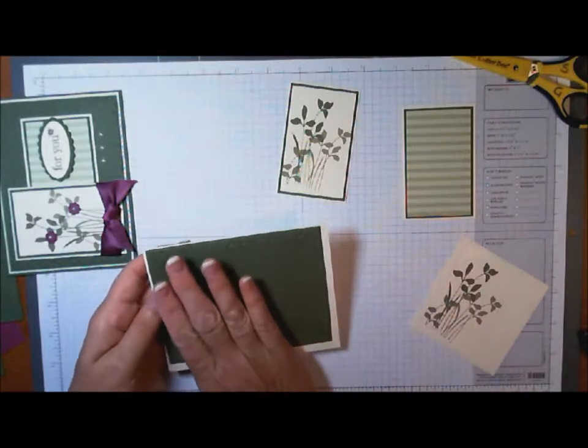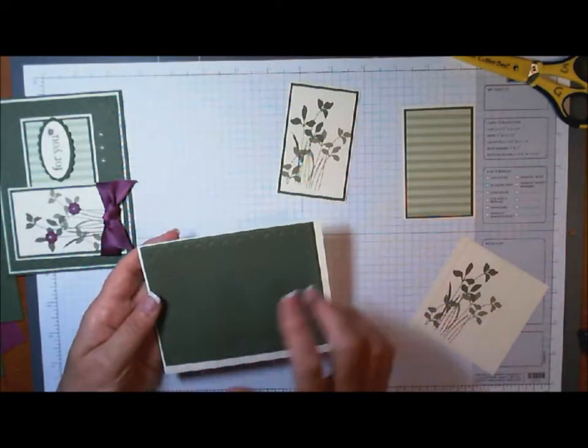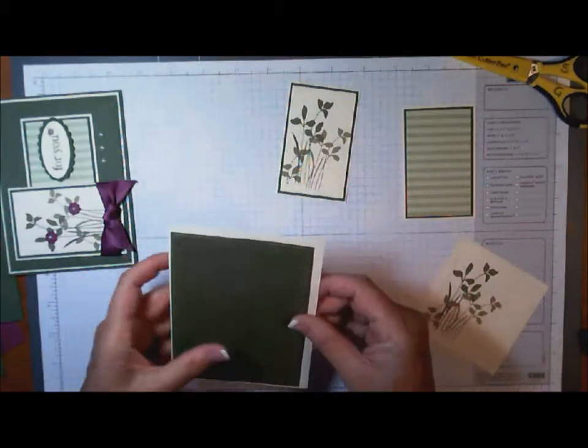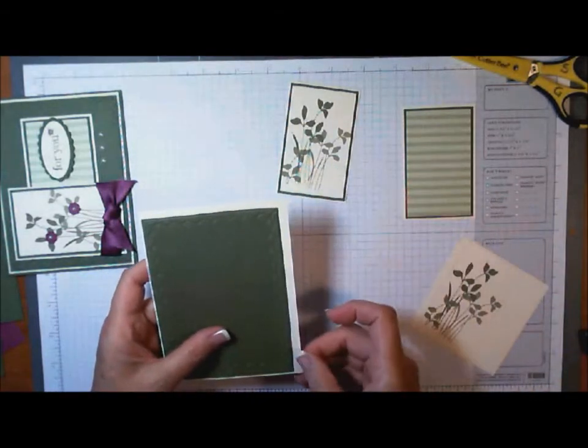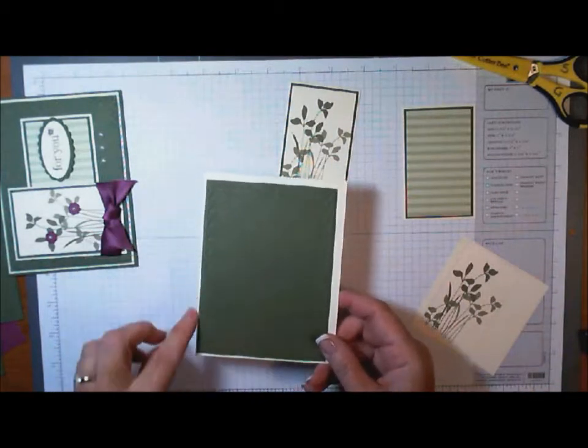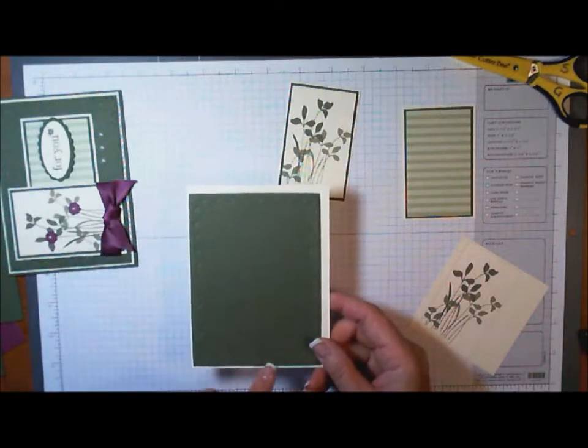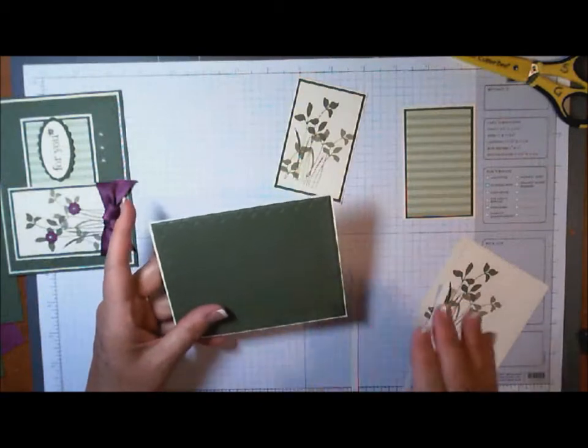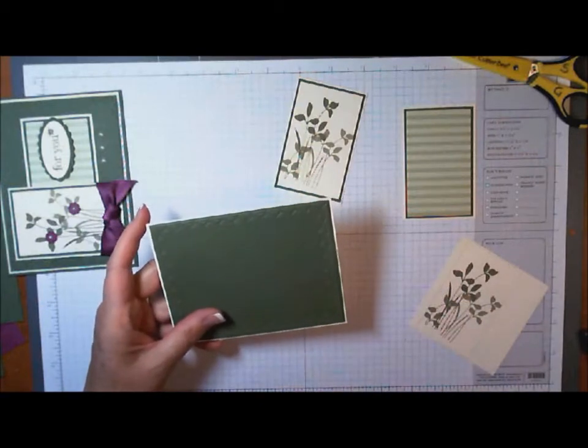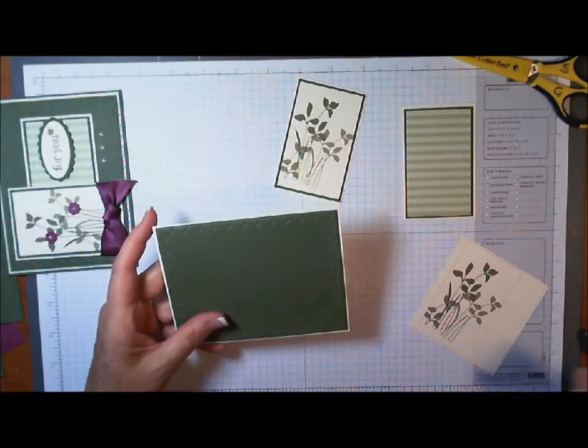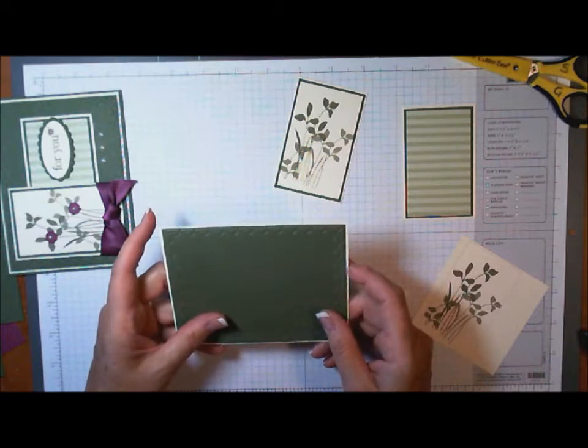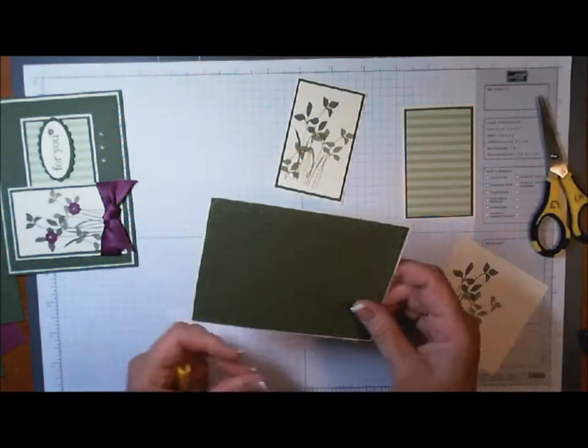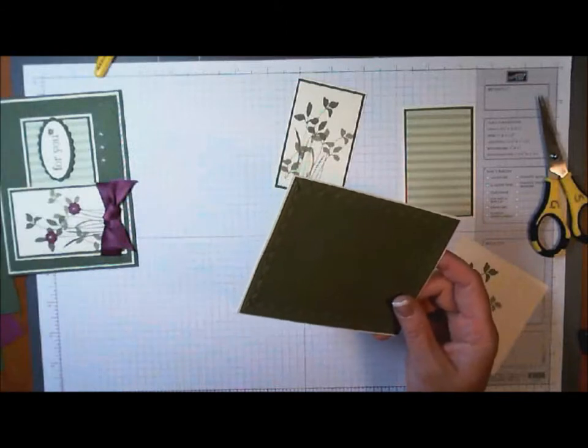Once you have your green embossed piece attached to your Very Vanilla, you can go ahead and take your personal trimmer and trim off a mat of about a sixteenth of an inch, which is what I've left on the other two sides. And if you wanted the exact measurement, if you wanted to go ahead and cut your Very Vanilla piece, it is five and five sixteenths by four and a sixteenth. Now this is ready to be mounted to the front of our card.